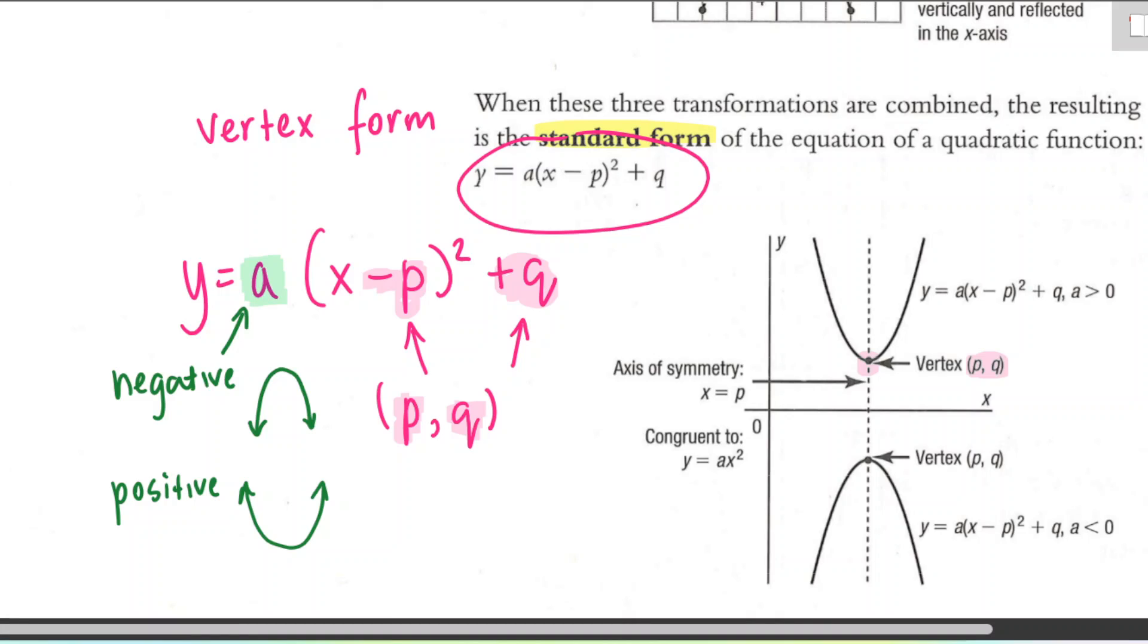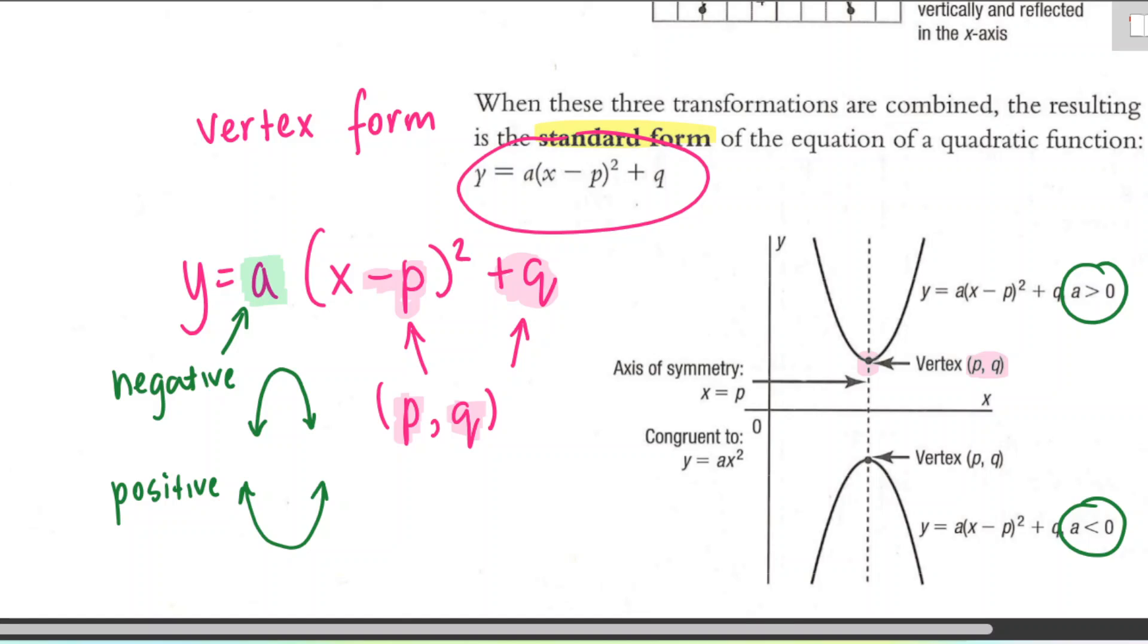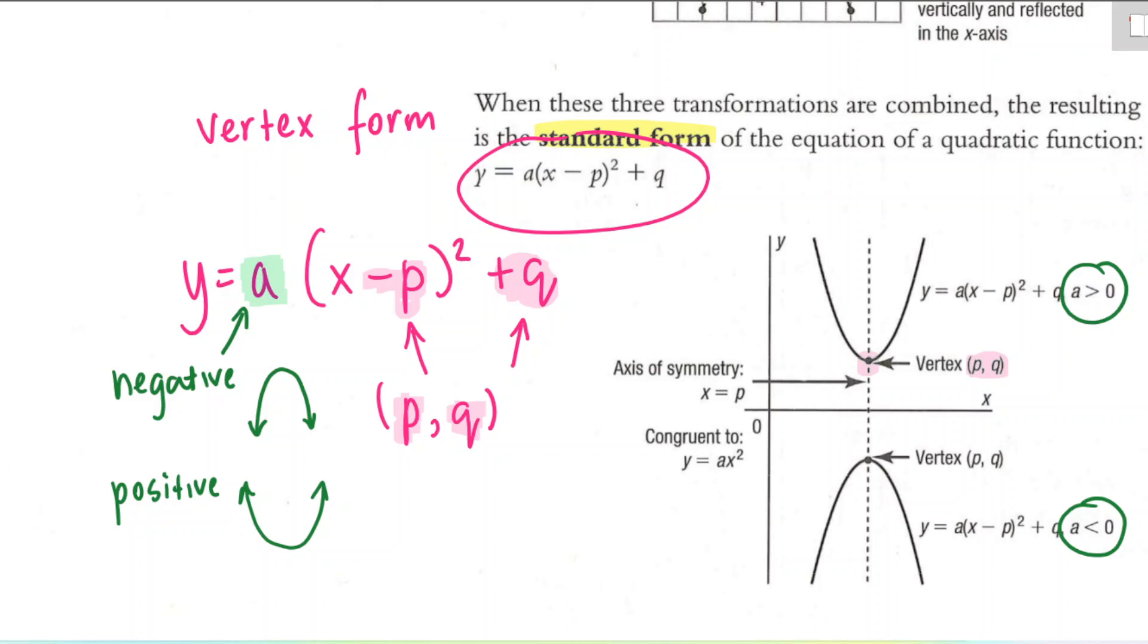So we can see the two examples here. When A is positive, we have kind of an upward-facing parabola. If A is negative or less than zero, we have a downward-facing parabola. Okay, so that's the information we can get directly from the function. And so we're just going to do two examples now. One where we're practicing going from the graph to an equation. And then the second example, we're going to be going from the equation to the graph.